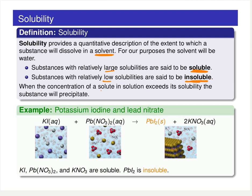When the concentration of solute in a solution exceeds the quantified solubility, you will get precipitation. In our previous example, the fact that this lead iodide compound comes together and forms a solid means that lead iodide is, in fact, an insoluble ionic compound.